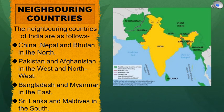The neighboring countries of India are as follows: China, Nepal and Bhutan in the north; Pakistan and Afghanistan in the west and north-west; Bangladesh and Myanmar in the east; Sri Lanka and Maldives in the south.